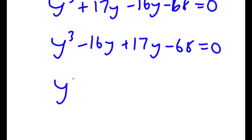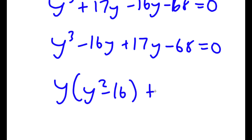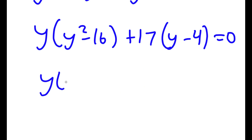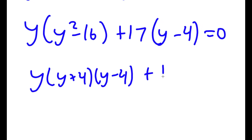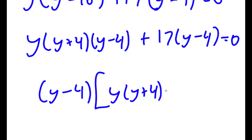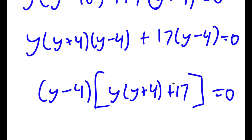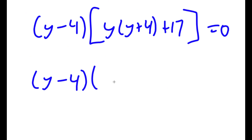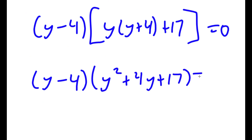From y cubed minus 16y, I factor out y to get y times (y squared minus 16), and from 17y minus 68, I factor out 17 to get 17 times (y minus 4). Since y squared minus 16 equals (y plus 4)(y minus 4), I have y times (y plus 4) times (y minus 4) plus 17 times (y minus 4) equals 0. Factoring out (y minus 4), I get (y minus 4) times (y times (y plus 4) plus 17) is equal to 0.